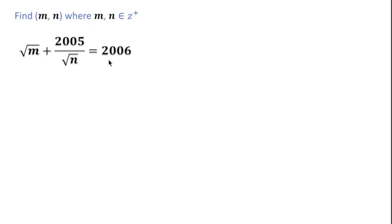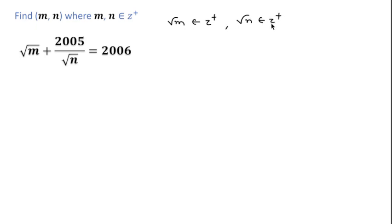Now I'm going to solve this question. As we can see, 2006 is a positive integer, so this means square root of m will also be a positive integer, and the fraction — that is, 2005 over square root of n — will also be a positive integer. So here square root of m is a positive integer and square root of n is also a positive integer. So if we write 2005 over square root of n equal to k, then k will also be a positive integer.